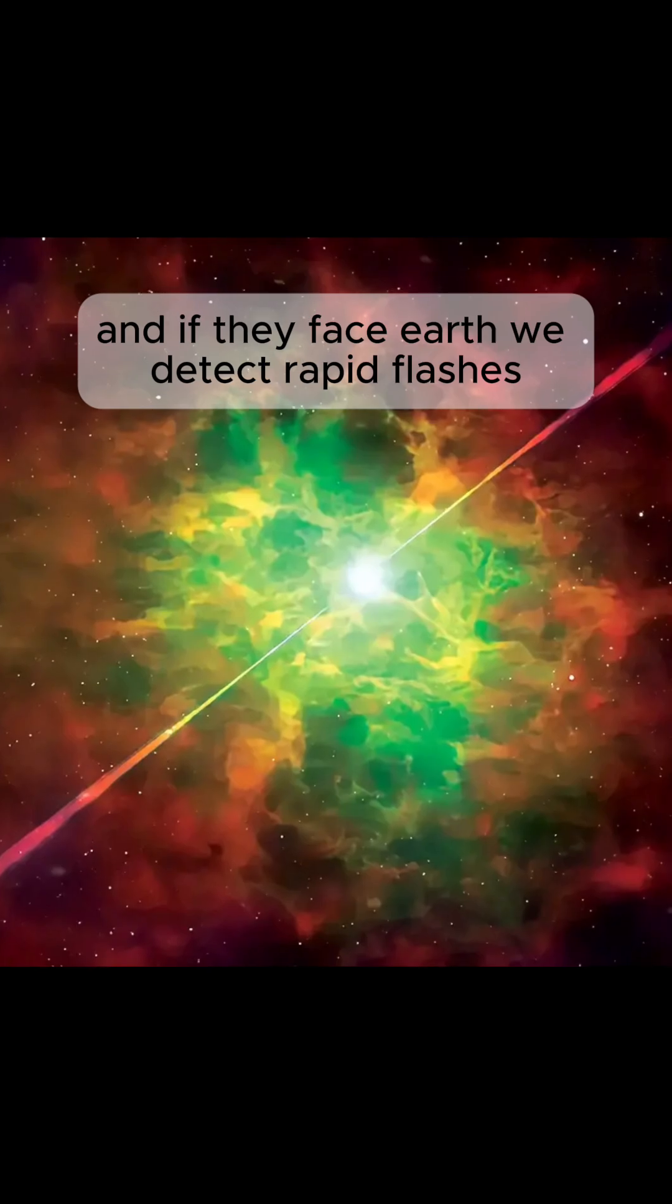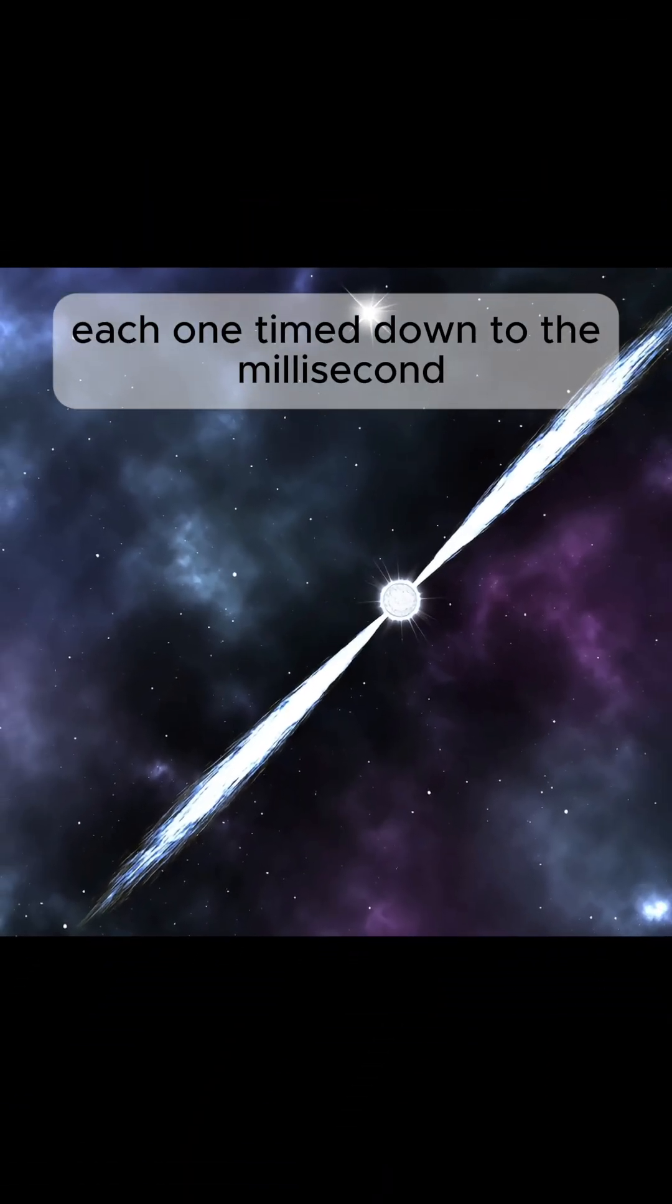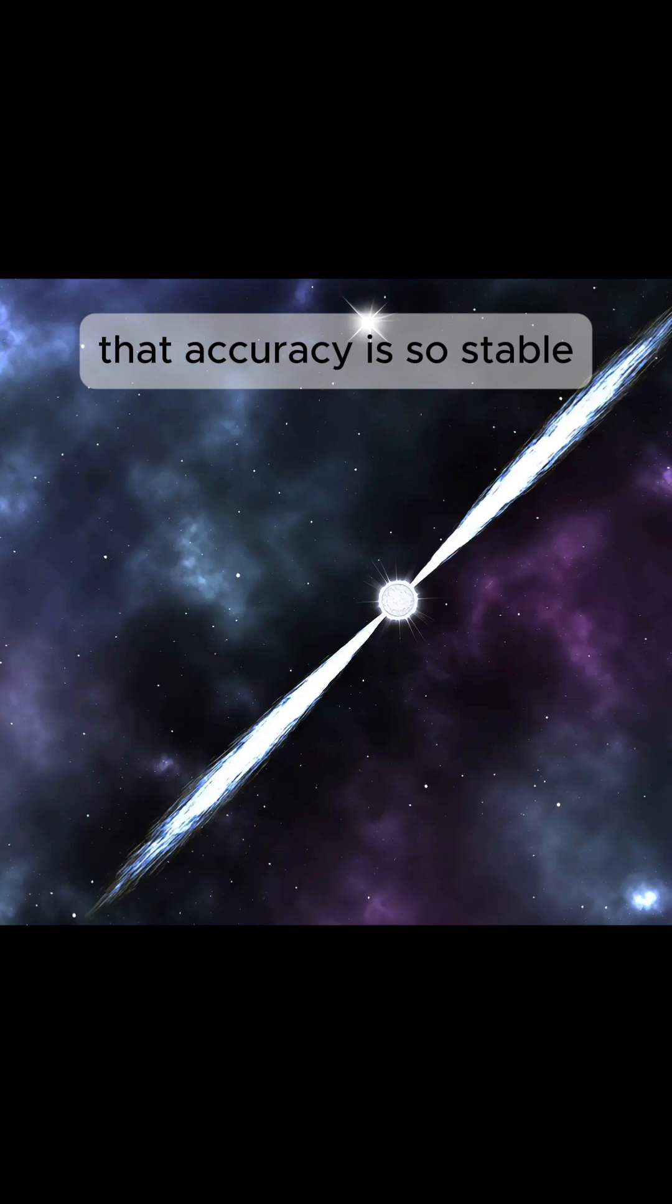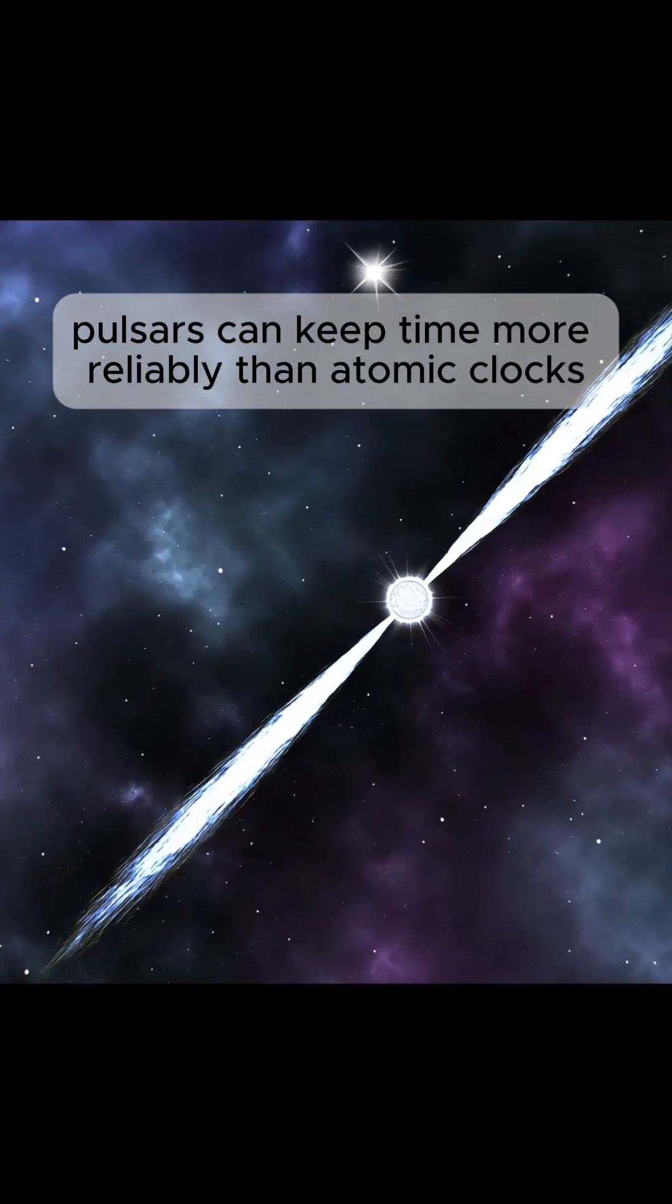And if they face Earth, we detect rapid flashes, each one timed down to the millisecond. That accuracy is so stable, pulsars can keep time more reliably than atomic clocks.